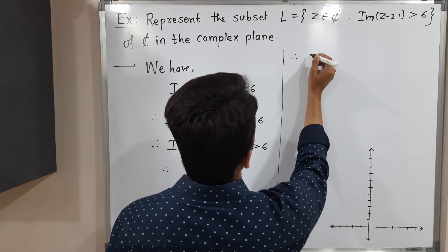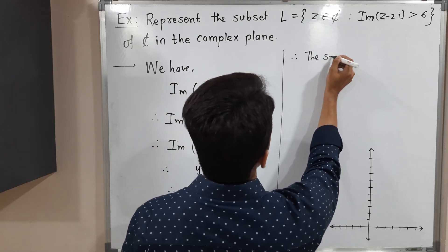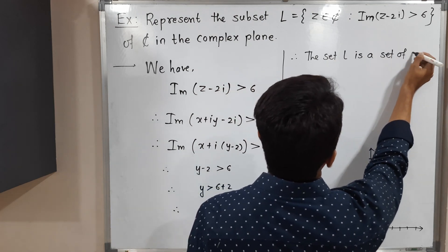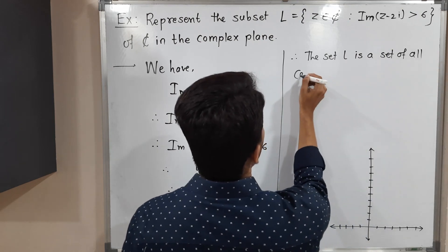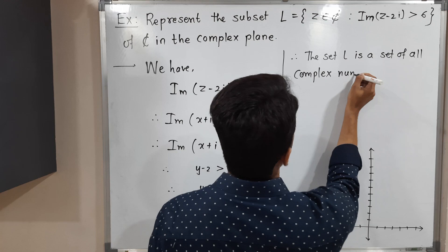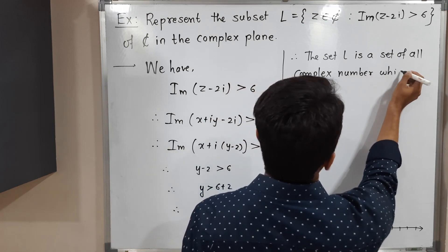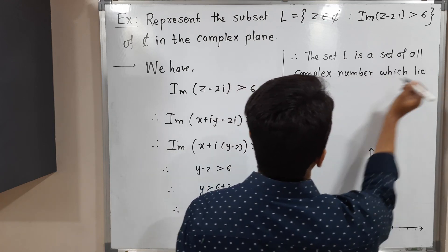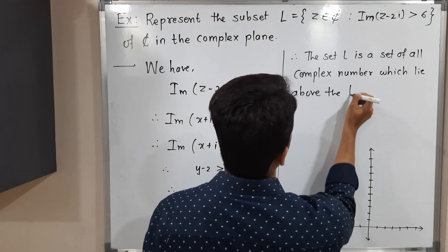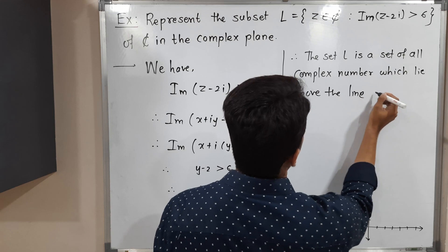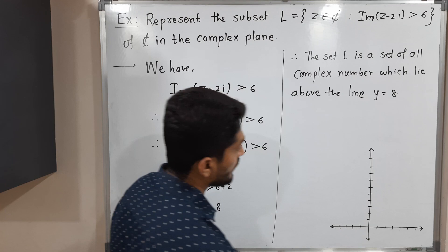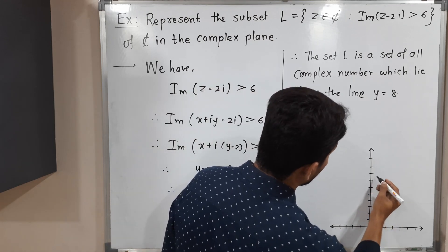Therefore, the set L is a set of all complex numbers which lie above the line y equals 8. Let me draw that line. So 5, 6, 7, 8...